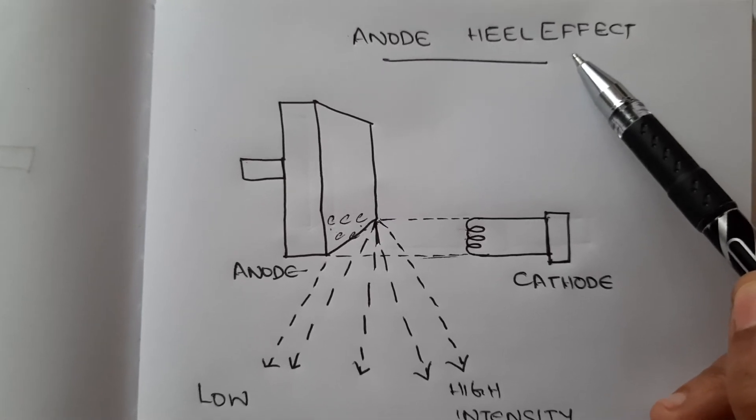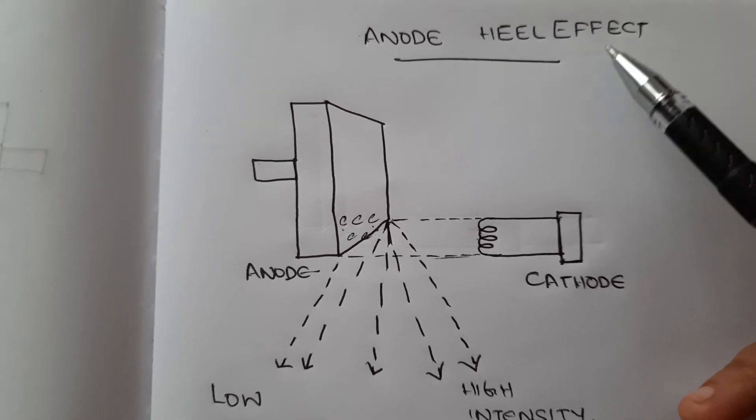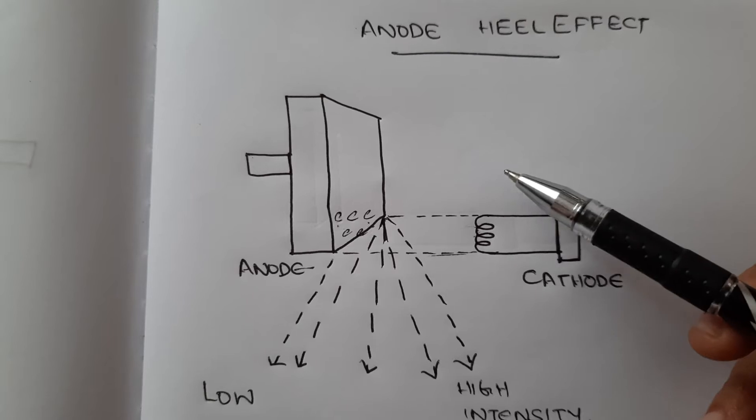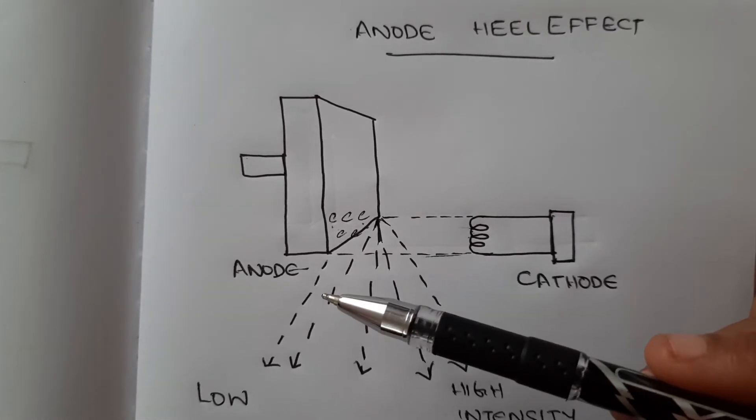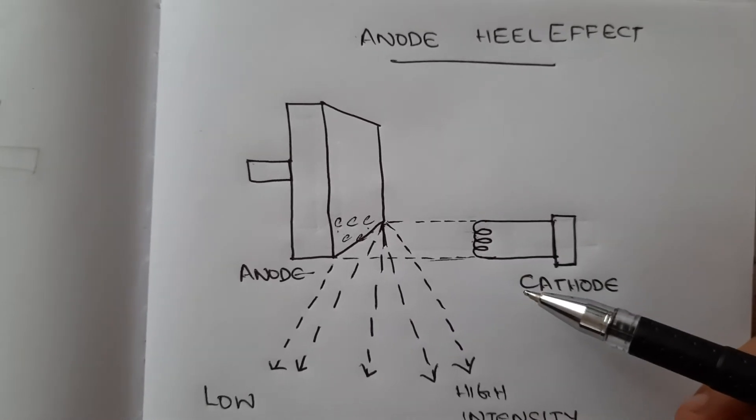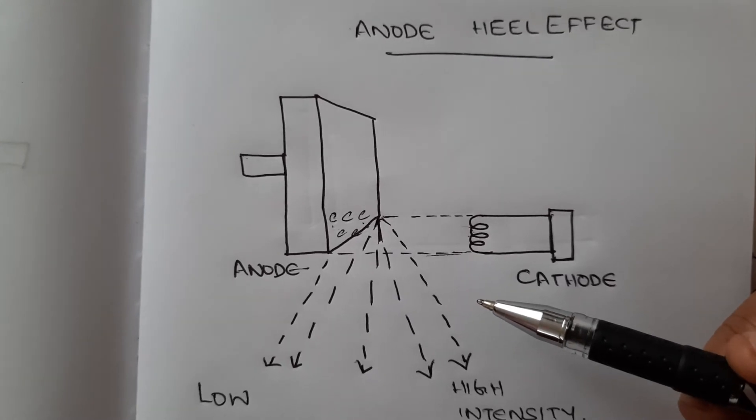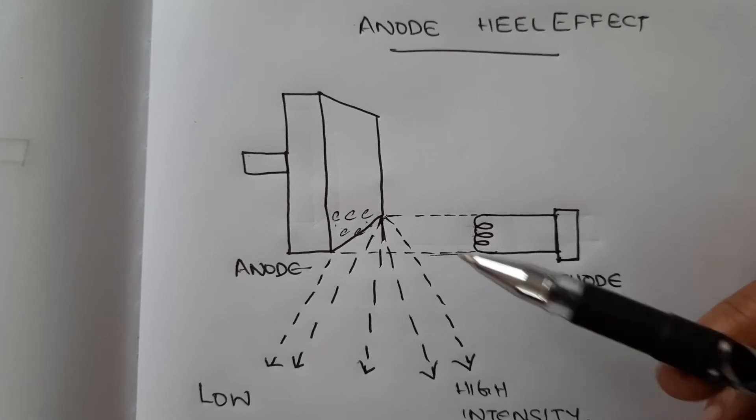What is the importance or benefit of the anode heel effect? Let's take the example of an x-ray of the abdomen. The upper abdominal area is less dense compared to the lower abdominal area because the lower abdominal area has denser structures such as the pelvic bone.